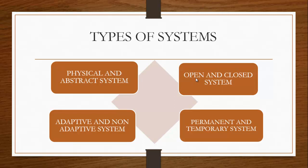Another classification is open and closed systems. When a system is open to interaction with its environment, it is called an open system — it receives input from the environment, processes it, and delivers output back to the outside. A closed system is one that does not interact with its environment and is isolated from environmental influences. In reality, a closed system is rare because every system must have some form of interaction with its environment, either partially or wholly.